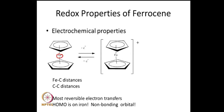There are some effects of the cyclopentadienyl ring, but this non-bonding nature of the highest occupied molecular orbital gives the iron atom a tendency to have very little change when it goes from ferrocene to the ferrocene cation. The ferrocene cation has very similar iron-carbon distances and very similar carbon-carbon bond distances. This allows for reversible electron transfers. Reversible electron transfer is possible only if the highest occupied molecular orbital is non-bonding, and that is accomplished in ferrocene.